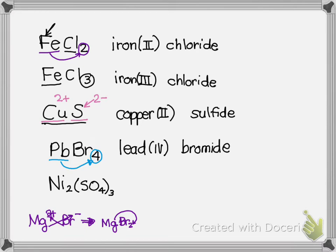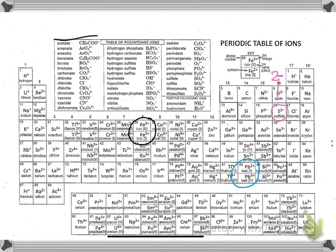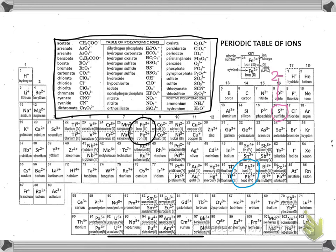We're just naming the two elements present — lead(IV) bromide. I also included a polyatomic ion in the last example. Polyatomic ions are many-atom ions: they have more than one atom and a charge. The hard thing about polyatomic ions is they have their own names and formulas, so you have to memorize them or use a reference table. I have a list of recommended ones in the study guide.